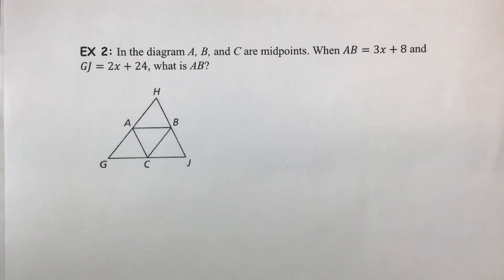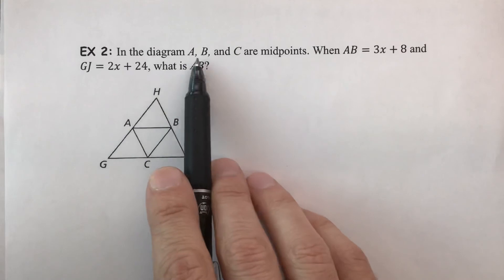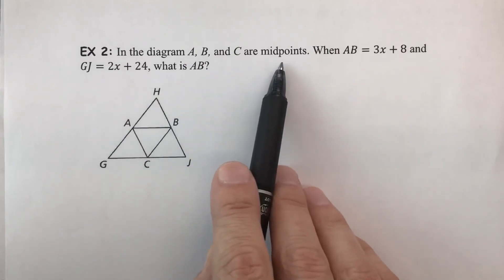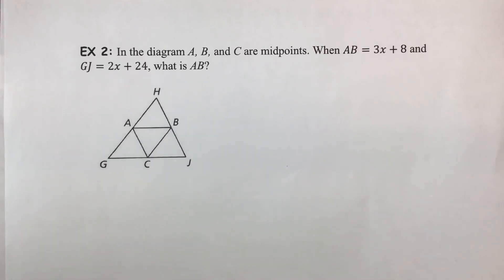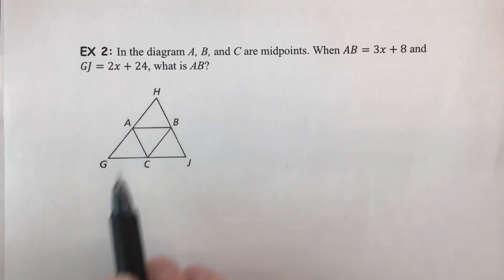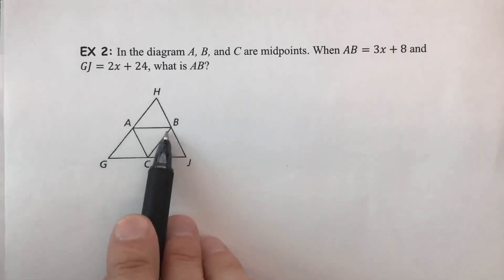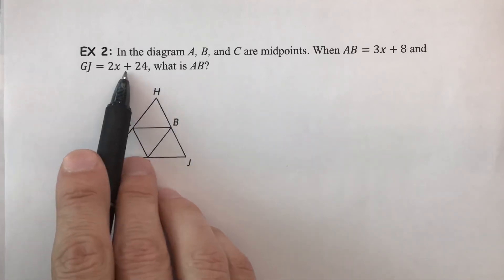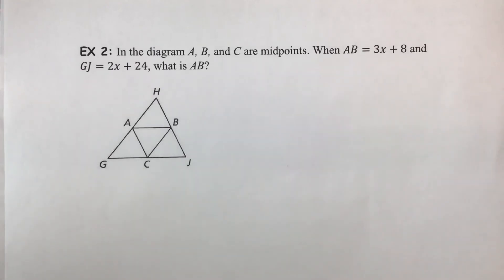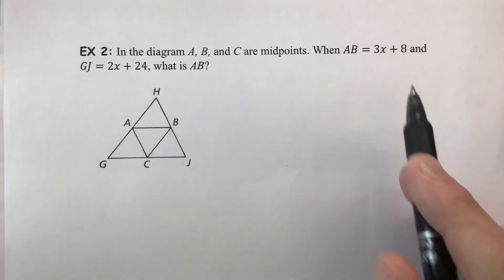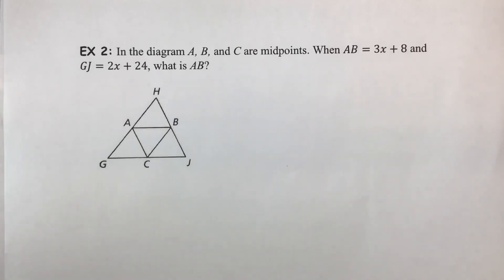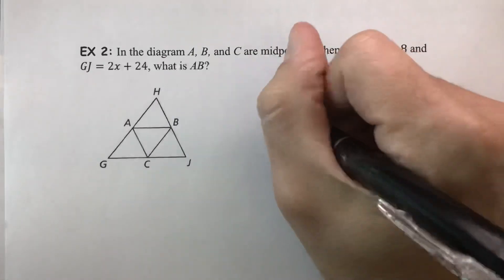For example two, we'll do a much more algebraic problem. We have a triangle with all three midsegments drawn. Points A, B, and C are identified as midpoints, so connecting them gives midsegments by definition. Because of our theorem, these are all congruent to their corresponding sides. We're told AB equals 3x plus 8, and GJ equals 2x plus 24. We need to find AB, so first we must solve for x.